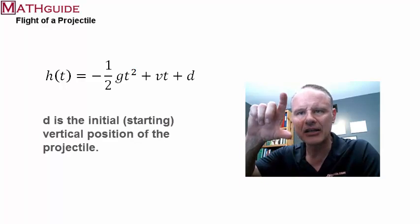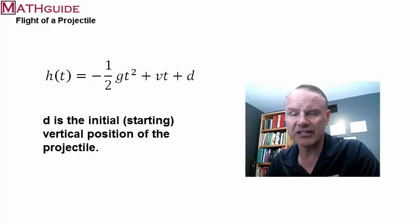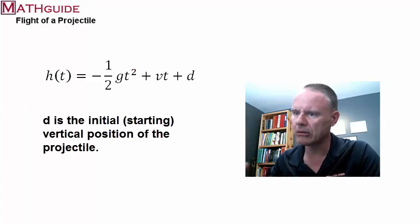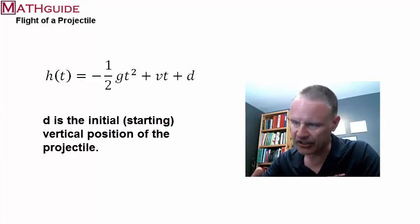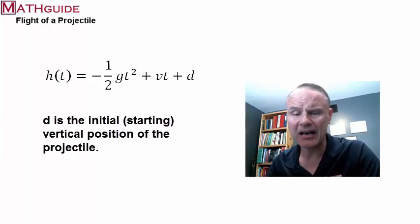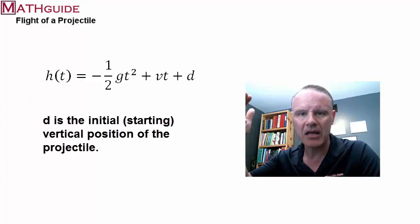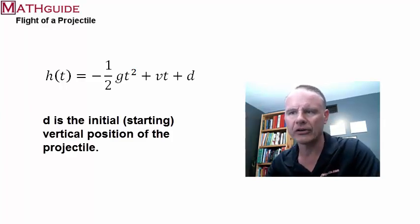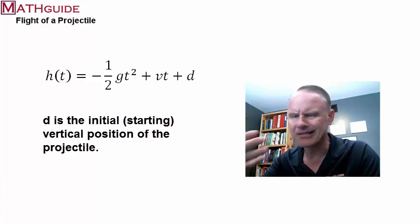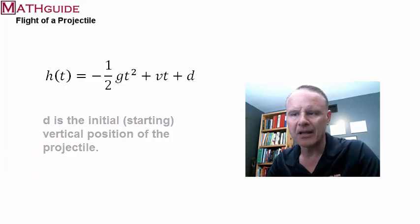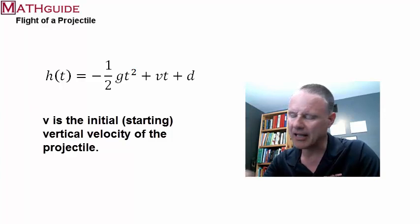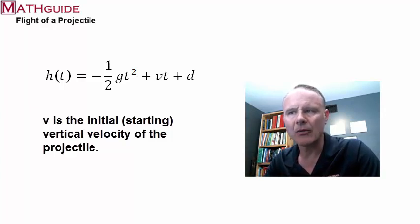Well, what's d? d is the initial distance. So if you're at ground level, your initial vertical distance is going to be zero. If you're in a hole, maybe you're in a 10-foot hole, then your distance would be negative 10. Maybe you're standing on a 100-foot cliff, so you would have an initial vertical distance of 100. V is the initial vertical velocity, so the vertical velocity is what we care about. We're only looking at the height of this projectile over time.